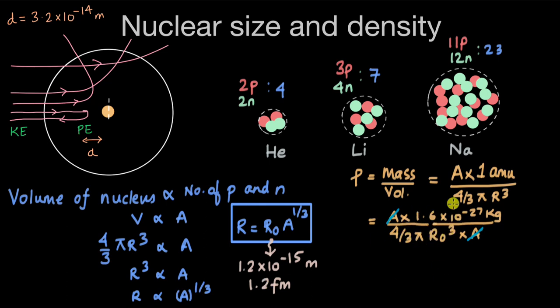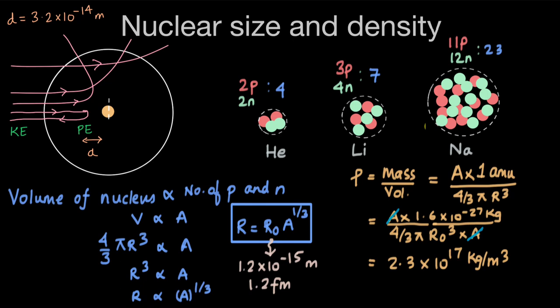When you work out this calculation with R₀ and the values substituted in, the nuclear density comes out to be 2.3 × 10¹⁷ kg/m³ — an insanely high number, but the interesting point is that it's constant for all nuclei. It's just like a water drop: whether you have a small water drop or a bigger one, the density stays the same. So the nuclear density is the same regardless of the nucleus size. That's the expression for nuclear radius and the constant nuclear density.